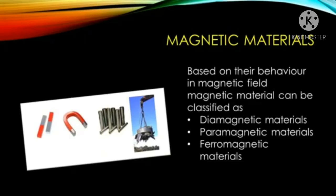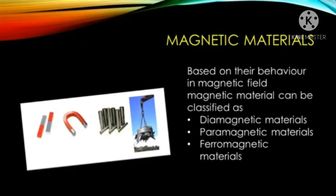Spread some iron pins, stapler pins, iron nails, a small piece of paper, a scale, an eraser and a plastic cloth hanger on a wooden table. Place a magnet nearby these materials. You will observe that some materials are attracted by magnets. These materials are called magnetic materials. For example, materials such as iron pins, stapler pins and iron nails were attracted by magnets. Some materials such as a small piece of paper, a scale, an eraser and a plastic cloth hanger are not attracted by magnets. These are called non-magnetic materials.